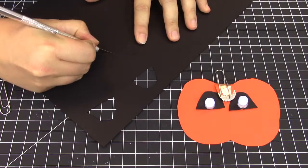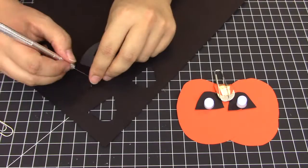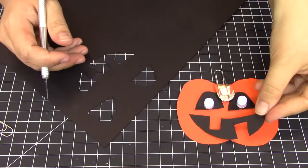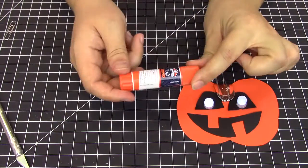Next you can cut out the mouth for your jack-o-lantern. We cut out two crazy teeth for ours and secured it with a glue stick.